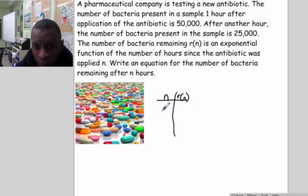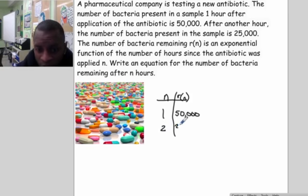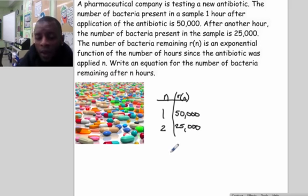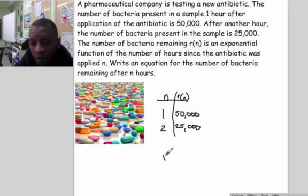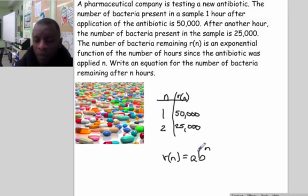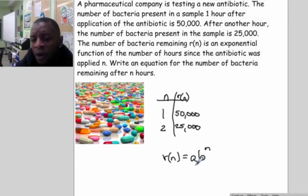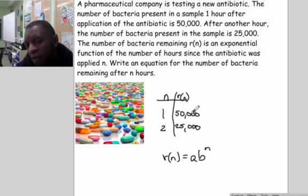We'll make a table with number of hours and R(n), the number of bacteria present. After one hour we have 50,000 bacteria; after two hours, 25,000 bacteria. We want to find an exponential function representing this situation, so we use standard form: R(n) = a times b raised to the n. Unlike the previous problem, we don't know the initial value here — we know values at one and two hours.